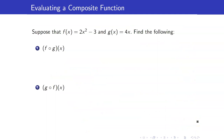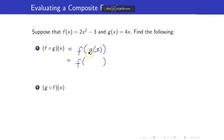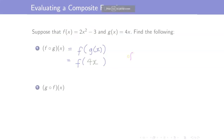Now suppose that we're given f of x equal to 2x squared minus 3x and g of x equal to 4x. We want to find f circle g of x. By definition, this is f of g of x. I will replace g of x by 4x, therefore we are looking for f of 4x. What I will do is write f of x as f of box, using a box placeholder.